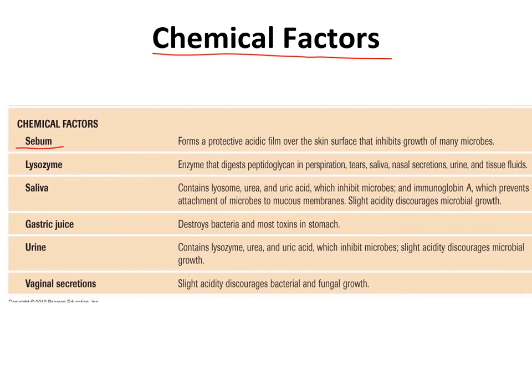The first chemical factor is sebum — basically the oil produced on your skin. It protects you in two ways: it is slightly acidic, which inhibits the growth of many microbes, and it helps maintain the integrity of your skin. If the sebaceous glands are not very active, skin becomes very dry and can crack. Cracked skin no longer functions as a barrier to prevent infection. So sebum creates an acidic environment inhibiting microbial growth and also maintains skin integrity.